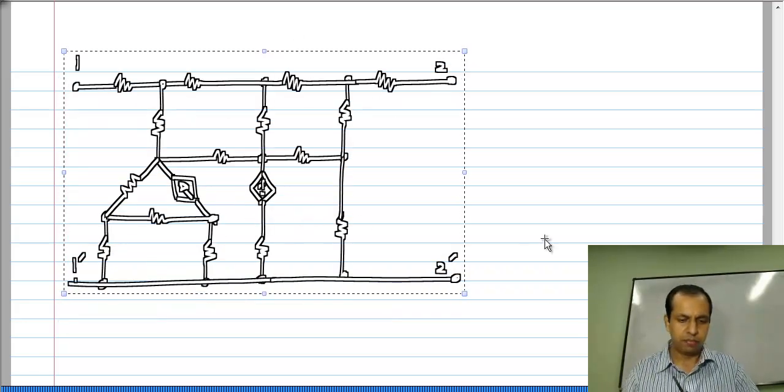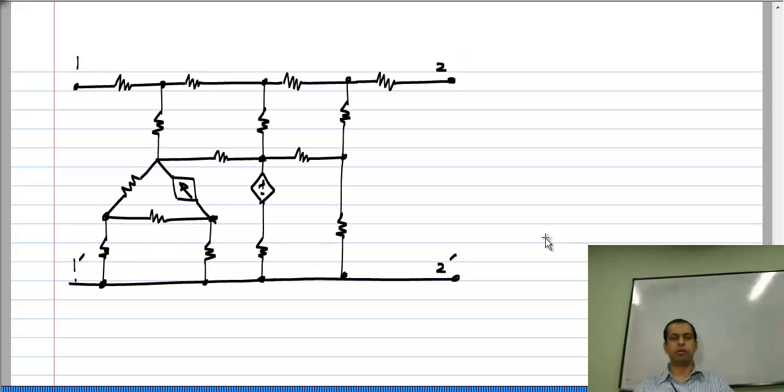Let us say we have a complicated circuit, something like this and it could be even more complicated than this. It could have hundreds of components. Now, I have marked these ports 1 1 prime and 2 2 prime. Let us say you are allowed to make connections only to these.